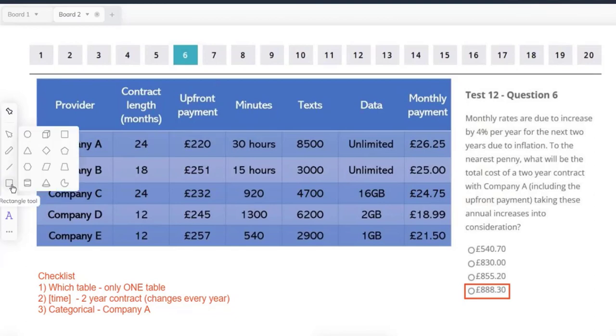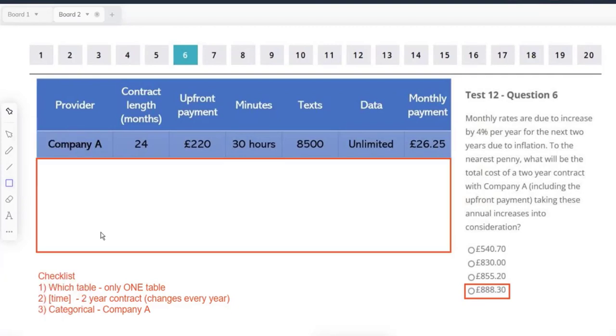With that in mind, basically a lot of this table becomes irrelevant. It makes the whole table look a lot more approachable. Upfront payment, not going to do anything about that. That's not going to be subject to an increase or anything. That's just £220, right?